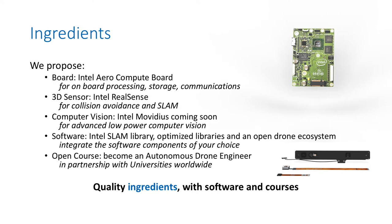In terms of ingredients, we propose a board called Intel Aero Compute Board for on-board processing, storage, and communication. It's a very versatile board. We also have a 3D sensor called Intel RealSense for collision avoidance and SLAM. For computer vision, we propose Intel Movidius chips that will come very soon integrated with Aero, for advanced low-power computer vision. And in terms of software, we have Intel's optimized libraries, and we rely on the entire open drone ecosystem to integrate software components of your choice.